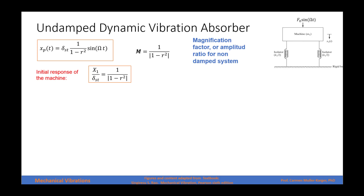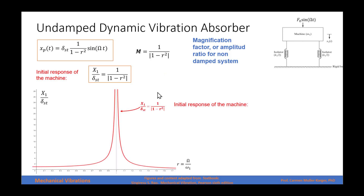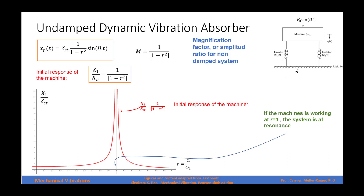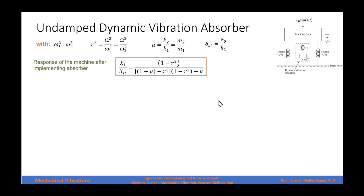Let's analyze the system working by itself — the machine without the absorber. When we have a harmonic force, the response is also a harmonic function at the same operating frequency, and the magnitude is multiplied by the magnification factor times the static deflection. The magnification factor is 1 over (1 − r²). From the graph, at r = 1 we are at resonance and the magnification factor goes to infinity, so the response also goes to infinity. If that is the operating frequency, we must fix it — and the solution is to add the vibration absorber.